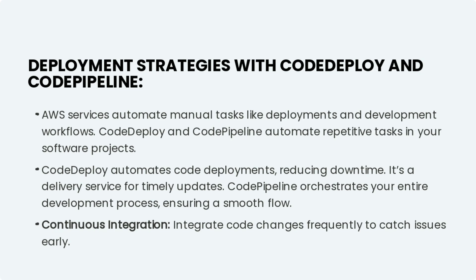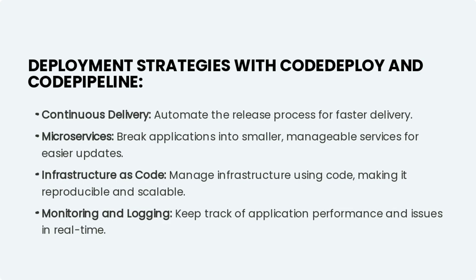CodeDeploy and CodePipeline automate repetitive tasks in your software projects. CodeDeploy automates code deployments, reducing downtime — it's a delivery service for timely updates. CodePipeline orchestrates your entire development process, ensuring a smooth flow. With continuous integration, integrate code changes frequently to catch issues early. Deployment strategies with CodeDeploy and CodePipeline support continuous delivery.